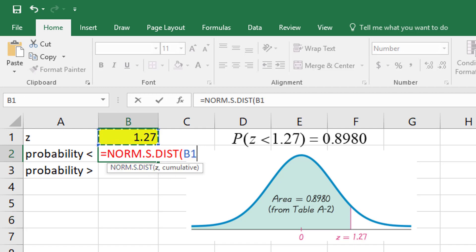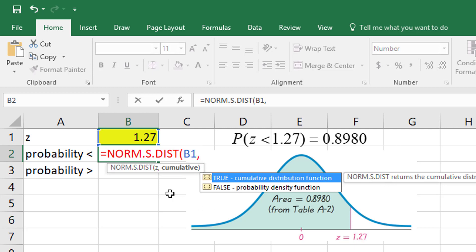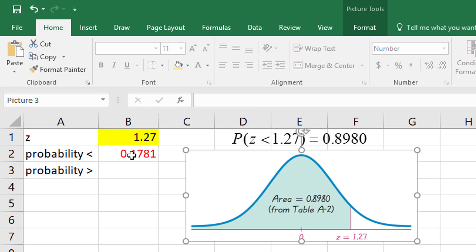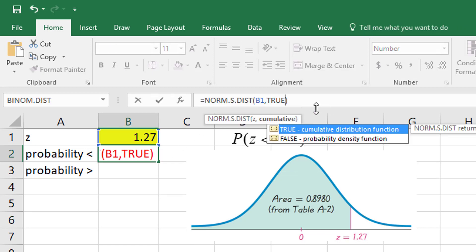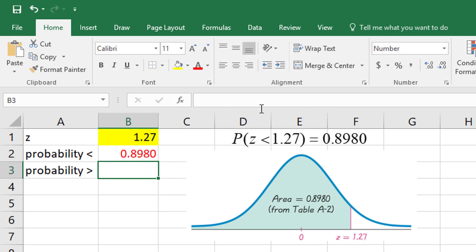I open my parentheses, it wants my Z value, so I click on 1.27. Comma. Cumulative says do you want to add up all that area? Certainly I do, so I say true, and then I press enter and I get the same answer that I got by looking it up in the table.